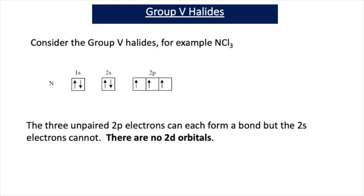Let's look at an example of octet expansion in terms of group 5 halides, starting with nitrogen and NCl3. Nitrogen has an electron arrangement of 1s2, 2s2, 2p3, giving it 3 unpaired 2p electrons. Each of these can form a bond, but the 2s electrons cannot because they're paired. There are no 2d orbitals, so therefore you can only have NCl3 — there is no opportunity for nitrogen to expand its octet and have a share of more than 8 electrons.